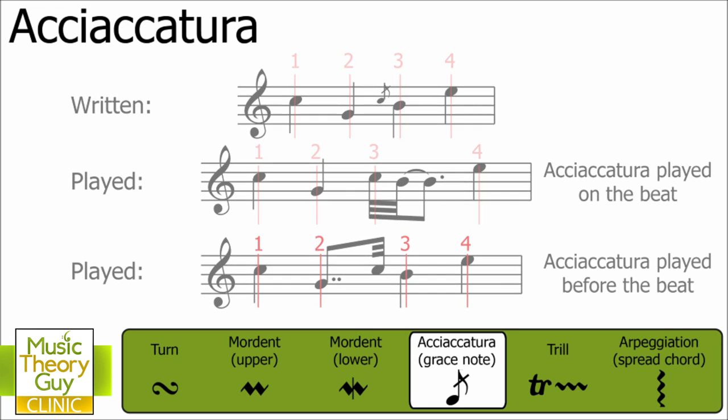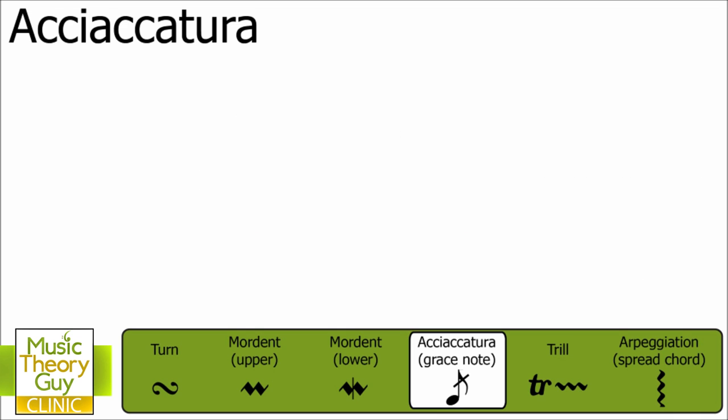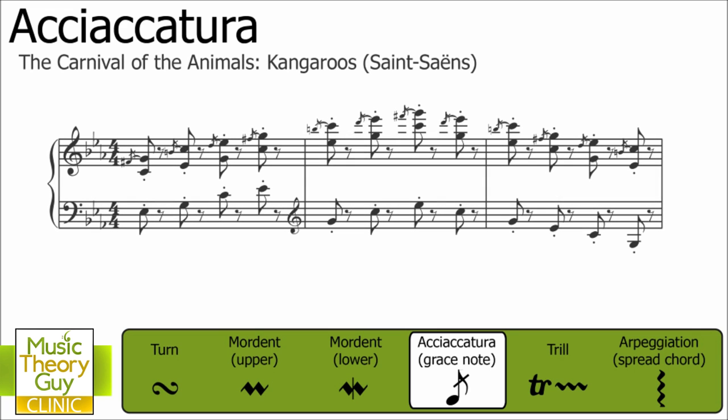If you'd like a good example of a piece of music where there's lots of use of acciaccaturas, go and have a listen to the Carnival of the Animals, and specifically the Kangaroo section. This is all by Saint-Saëns, and it's available on YouTube, or you could buy the CD. Here are the opening three bars, and you can see and feel how those little acciaccaturas represent that sort of hopping movement of the kangaroo. Let's have a listen.